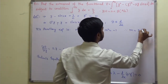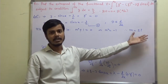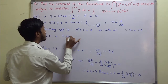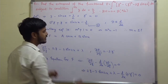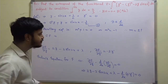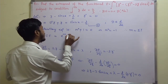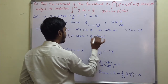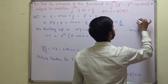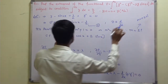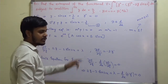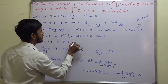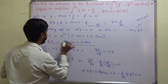From the auxiliary equation m squared minus 1 equals 0, we get m equals plus or minus i. The roots are complex, so we read m as 0 ± 1i. Therefore, the complementary function is CF equals e^(0x) times (a cos x + b sin x), which simplifies to a cos x + b sin x.